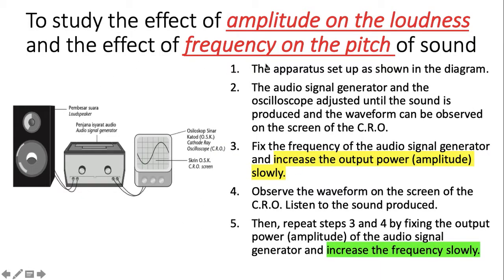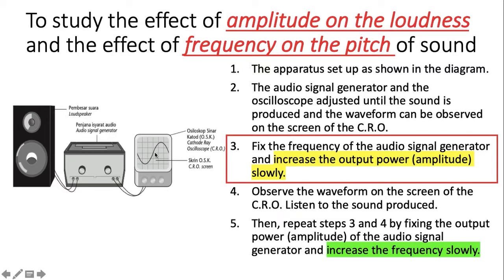This is an activity experiment to study the effect of amplitude on loudness and the effect of frequency on the pitch of sound. The apparatus is set up as shown in this diagram. The audio signal generator and the oscilloscope are adjusted until the sound is produced and the waveform can be observed on the screen of the CRO. Fix the frequency of the audio signal generator and increase the output power, which is the amplitude, slowly.